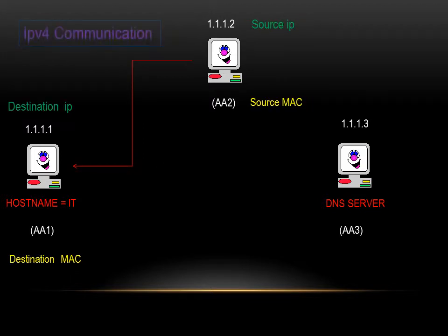Once both name and address are resolved, AA2 knows the IP and MAC address of hostname IT. So, in IPv4 communication, AA2 can send a ping request to AA1.